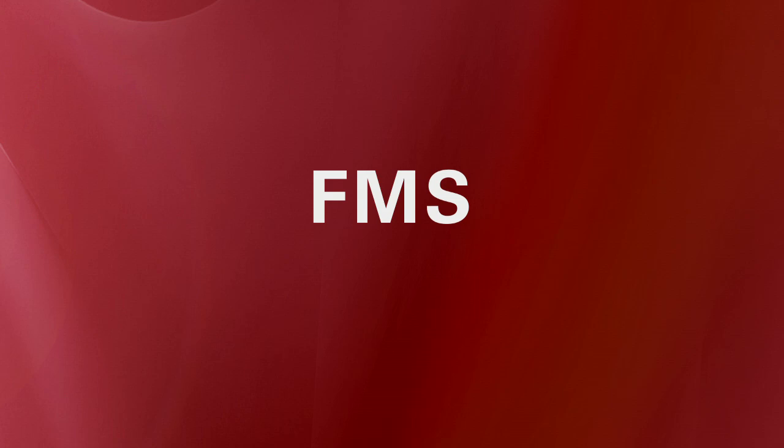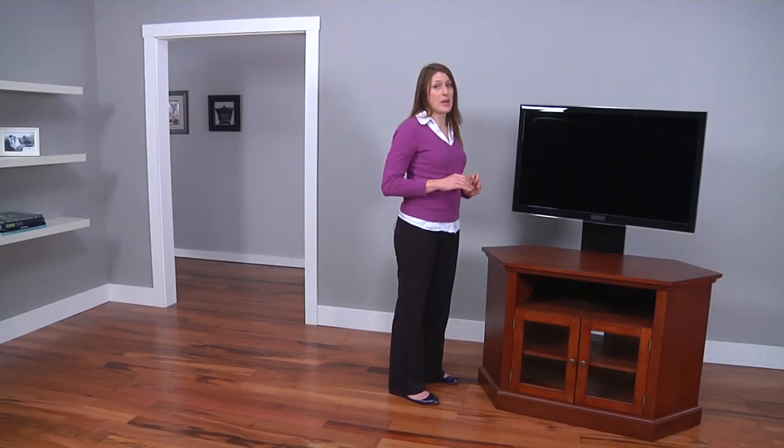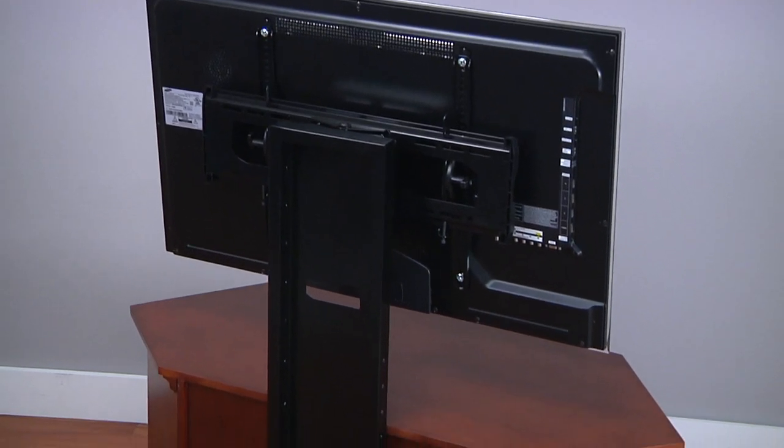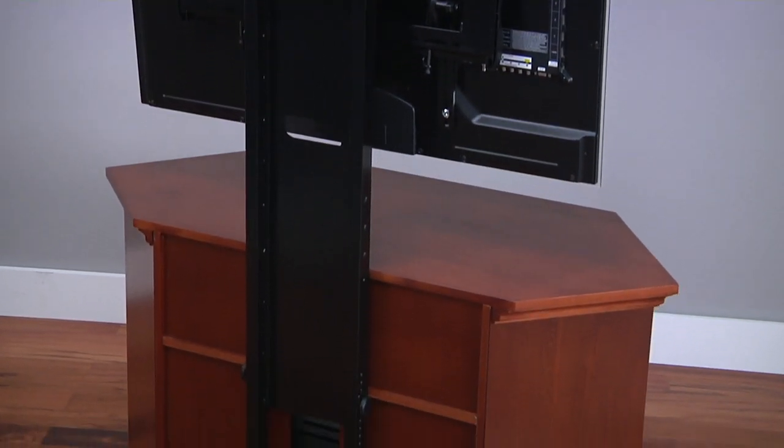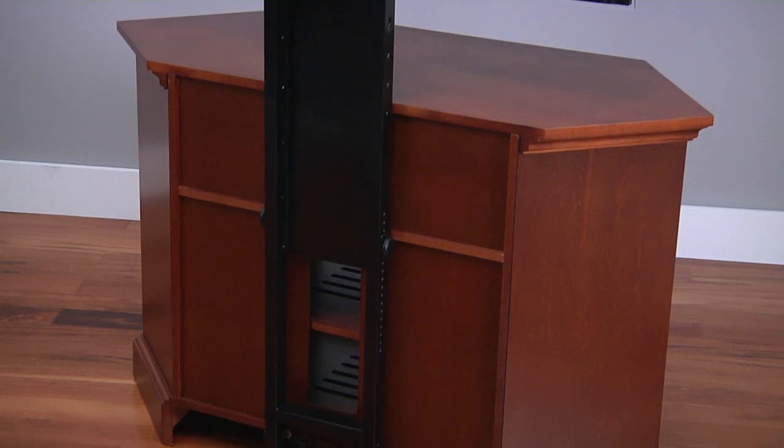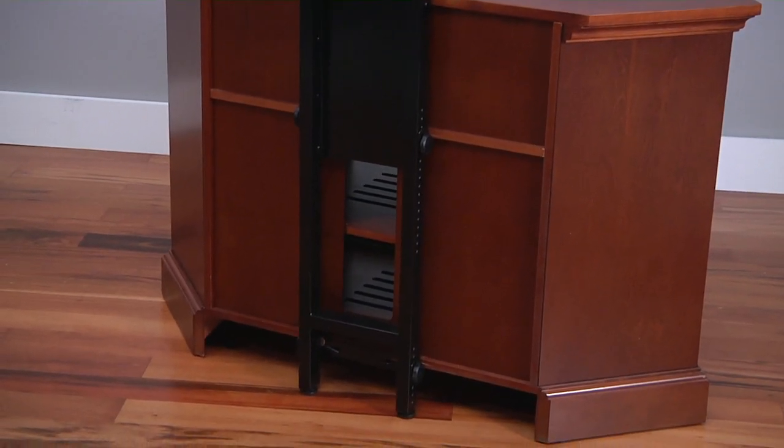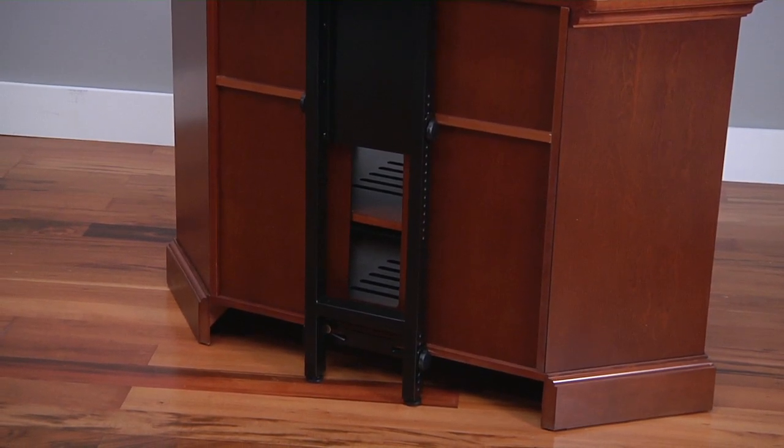Another option is to use the versatile FMS floor mount system. The FMS attaches to the back of nine different Sanus furniture models. This means you can choose a piece of furniture to match the decor of your home, whether it be modern or traditional.